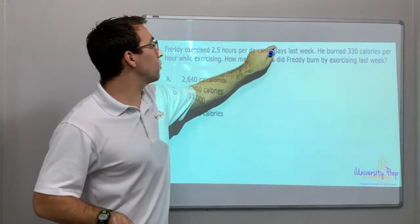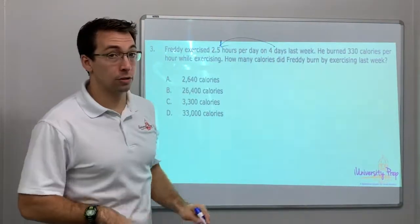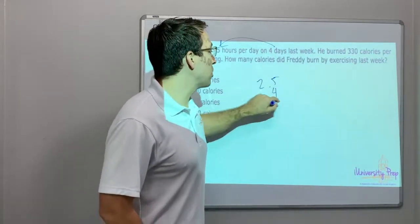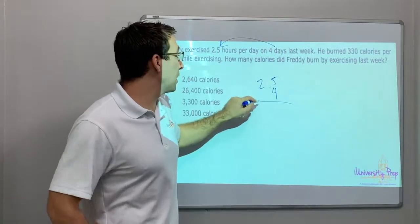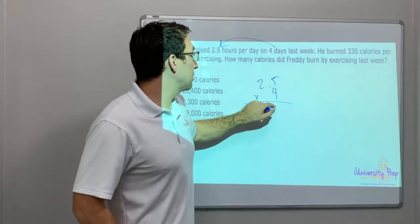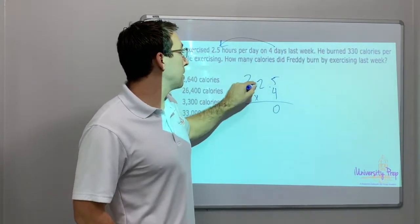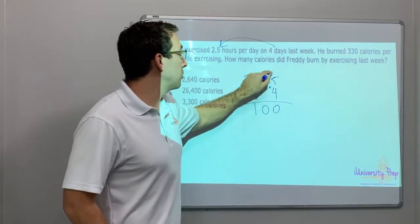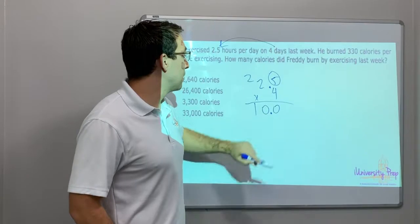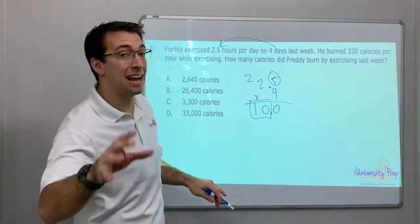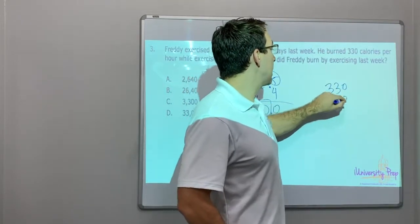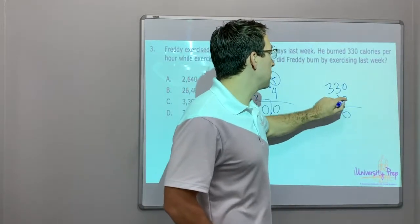Let's do four days times hours first to find total hours. 2.5 times 4, that's like 25 cents times 4 is a dollar, right? Check this out: four times five is twenty, carry my two. Four times two is eight, plus two is ten, one dollar. But one decimal, so we have ten. He worked out ten hours last week.